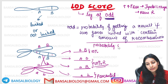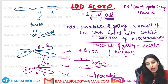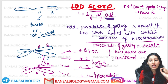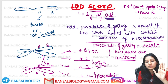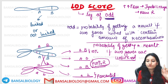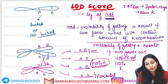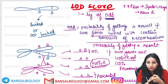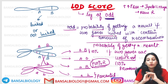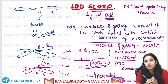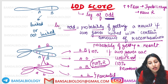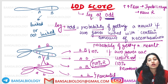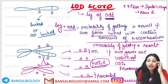This probability is divided by the probability of getting that result if the two genes are unlinked. If the genes are unlinked, you will get 50% recombination — recombination will never exceed 50%. When we look at this ratio, we get the odds. When we take the log of this odds ratio, we get the LOD score.